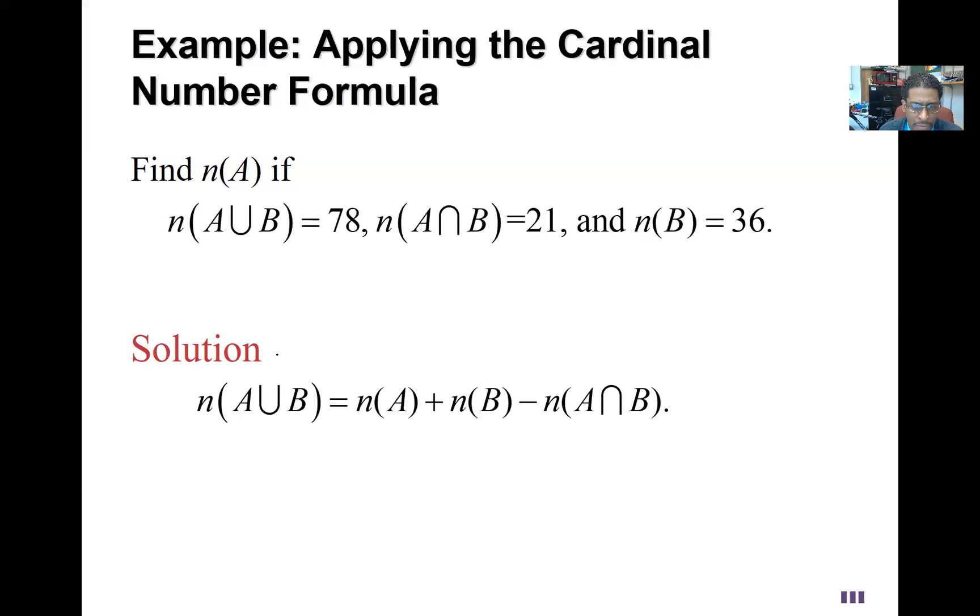So go back to the formula. We just plug in, we don't need a Venn diagram, we could do a Venn diagram but we don't even need it. With this formula here, the union is 78, the B has 36 in it, the intersection has 21 in it, and it's our job to then figure out how many are in A.